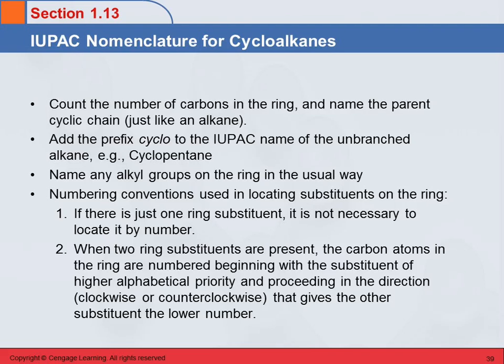Then you look at any substituents attached to the ring. We name those the same way as for acyclic alkanes. The numbering is a little different. If there's only one ring substituent — only one thing attached — you don't have to specify which carbon it's on, because we always number to give the lowest number, so it would always be one.